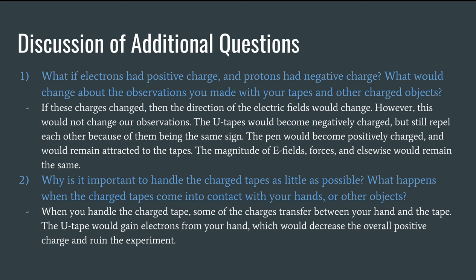Why is it important to handle the charge tapes as little as possible? When you handle the charge tape, charge can transfer between your hand and the tape. In this case, electrons would go from your hand to the tape. This is going to basically decrease that positive charge on the tape, which is going to make them not interact. They're going to become a neutral object, and that would ruin the experiment.